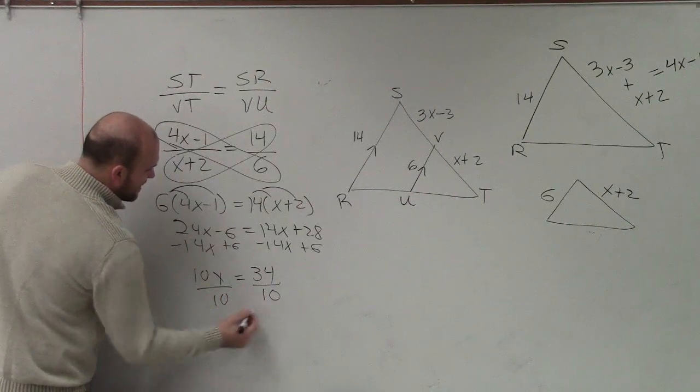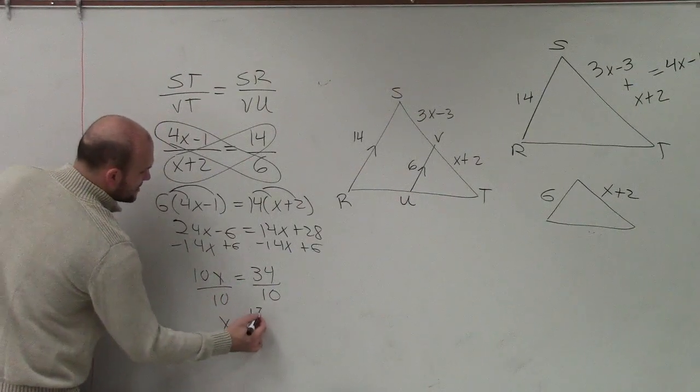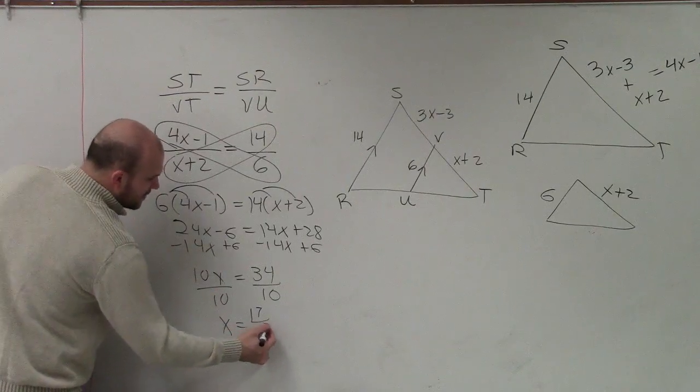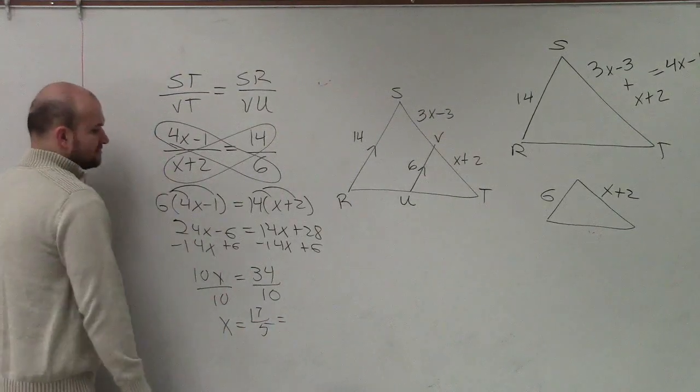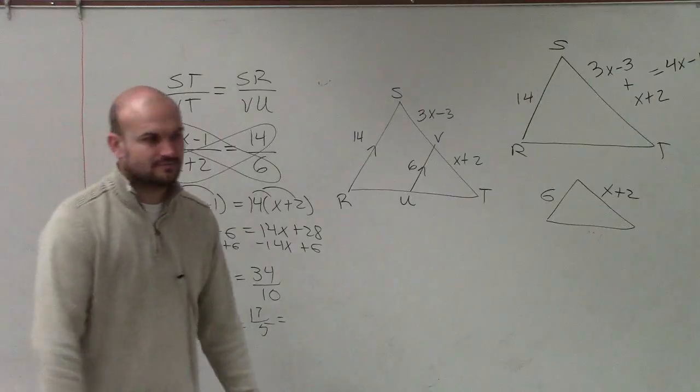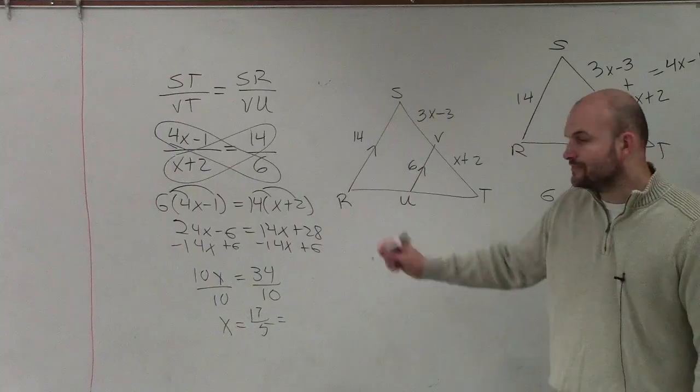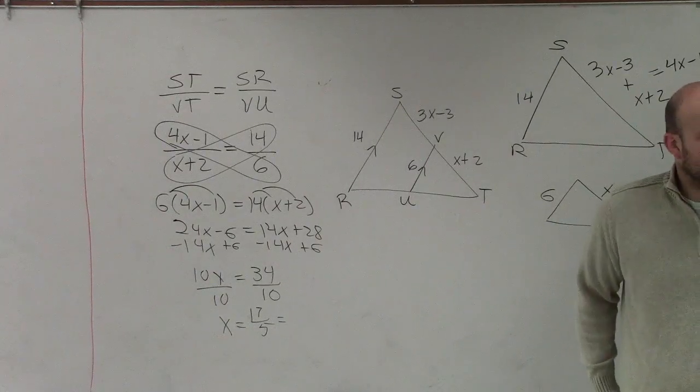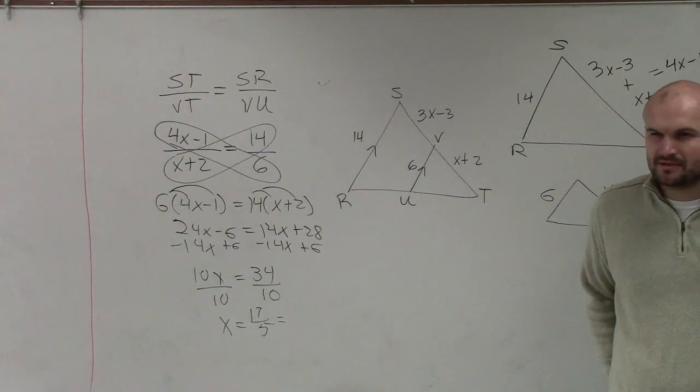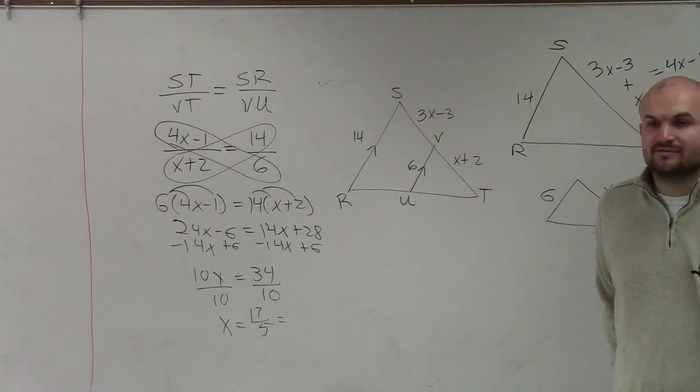Divide by 10, divide by 10. x equals 17 over 5. Or you could also say 3.4. But I like leaving things as fractions. But obviously, if you divide that, you could also get 3.4, which would be the same answer. But I like 17 over 5.